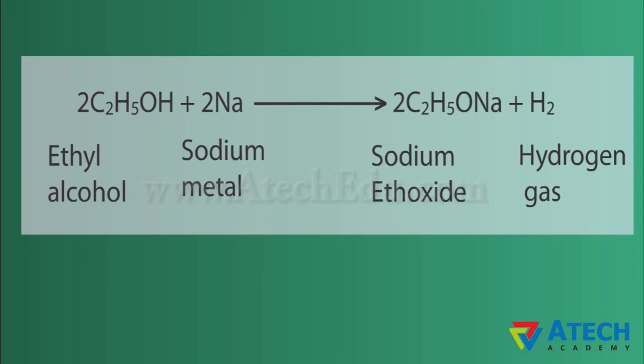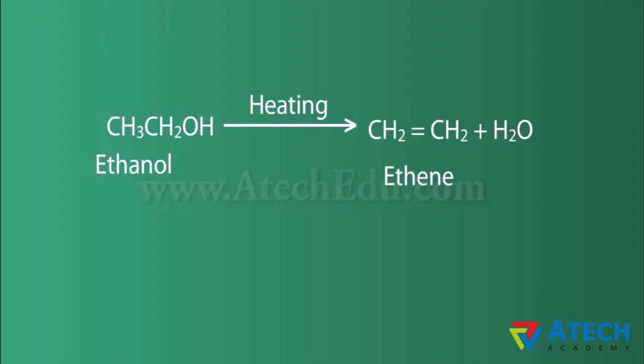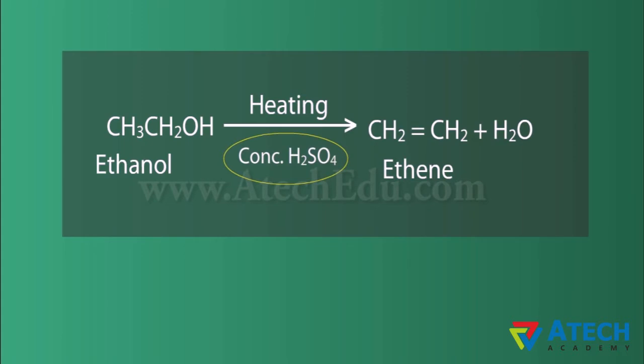When a piece of sodium metal is poured over ethyl alcohol, vigorous reaction occurs and hydrogen gas is bubbled out. Heating ethanol at 443 Kelvin with excess concentrated sulfuric acid results in the dehydration of ethanol to give ethene, which is an unsaturated hydrocarbon. The concentrated sulfuric acid can be regarded as a dehydrating agent which removes water from ethanol.